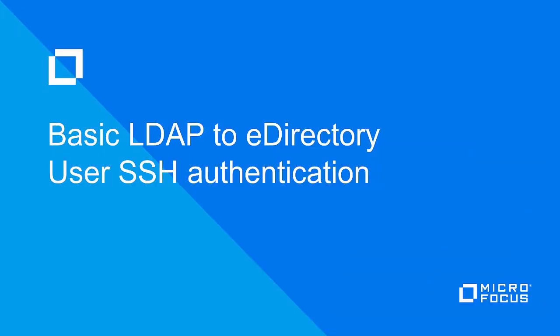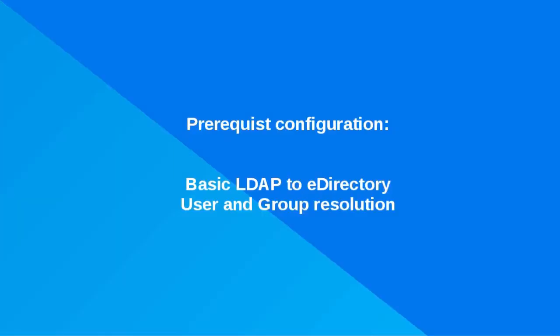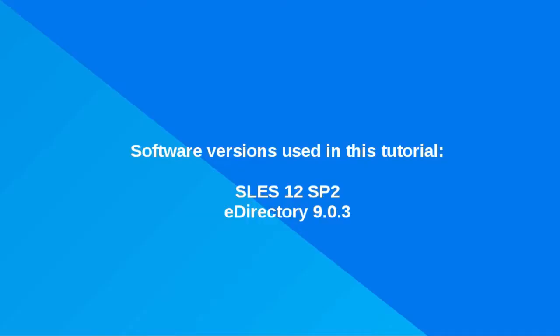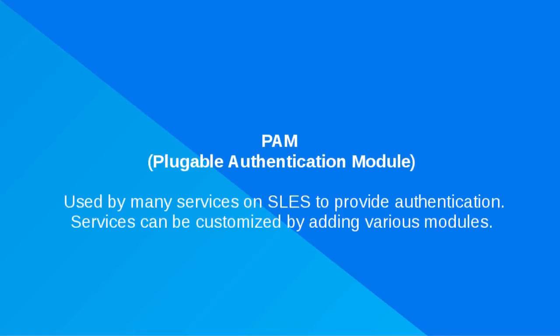Basic LDAP2E Directory User SSH Authentication. The prerequisites for this tutorial consist of configuration performed in the Basic LDAP2E Directory User and Group Resolution tutorial. The software versions used in this tutorial are SUSE Enterprise Linux 12SP2 and EDirectory 903.